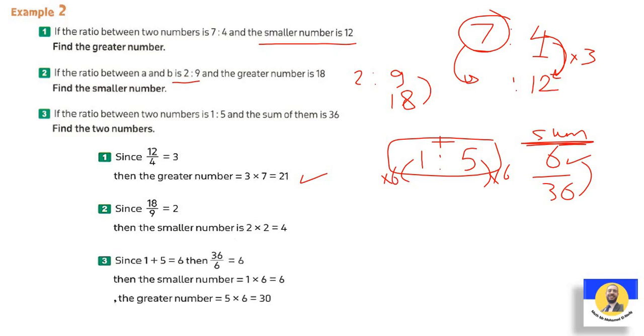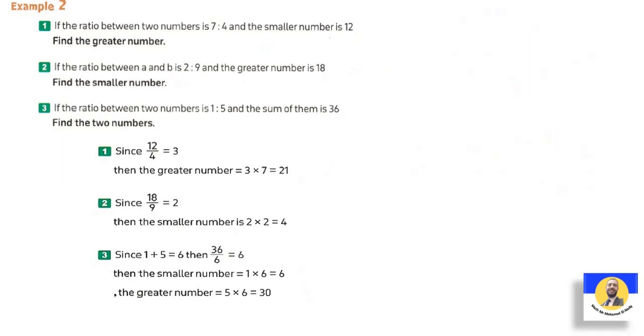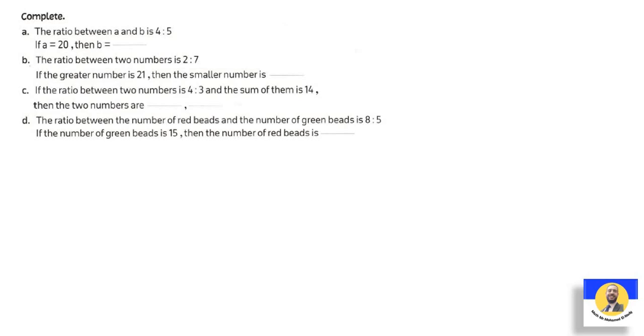Complete: the ratio between a and b is 4 to 5. If a equals 20, then b equals what? We do 20 divided by 4 equals 5. So 5 by 5 equals 25. So b is 25.